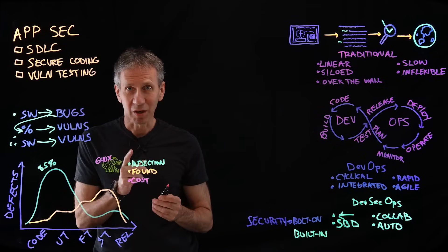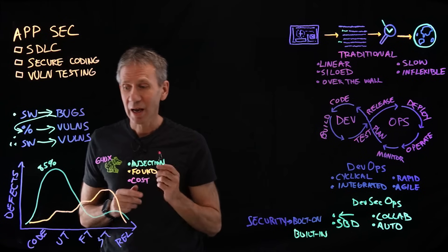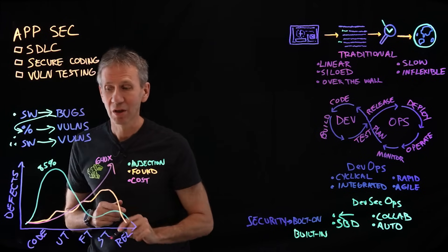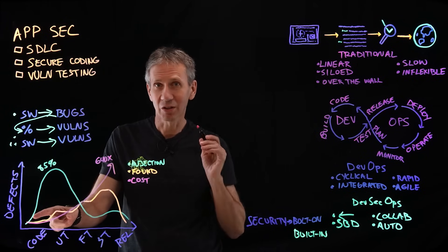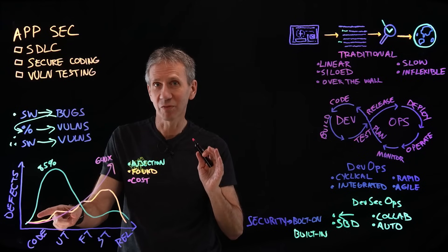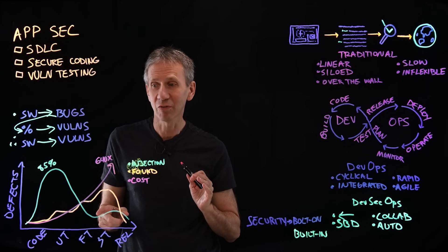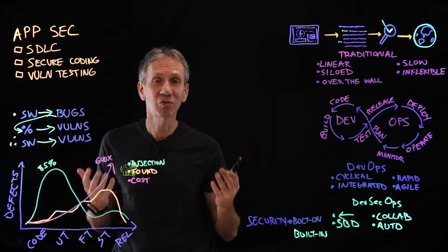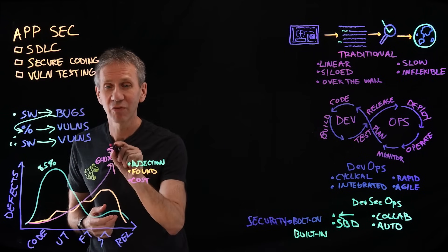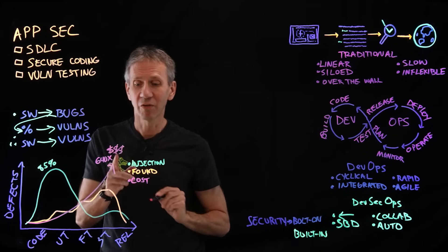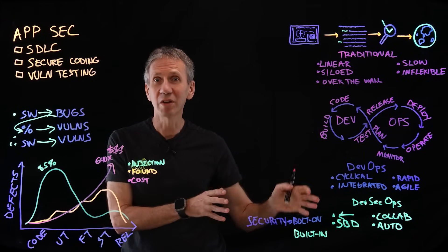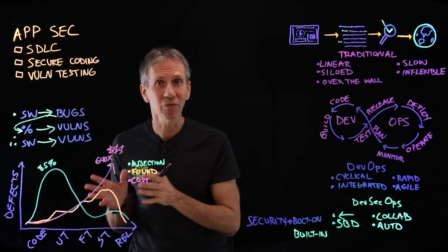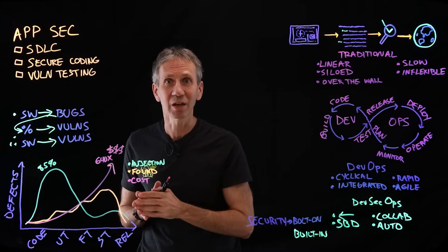The interesting thing about all of this is the cost. It turns out cost goes from 1x — as the baseline cost to fix a bug in the coding phase — to in some cases 640x. It is vastly more expensive to fix a vulnerability once it's in the field than it is to catch it early. So there's a huge incentive for us to get this right and get it early.